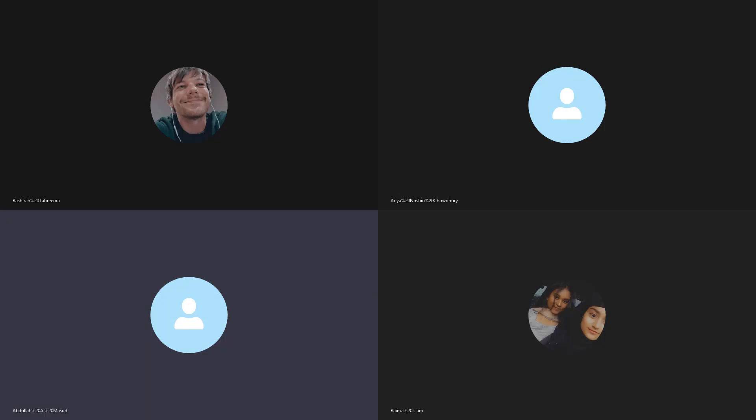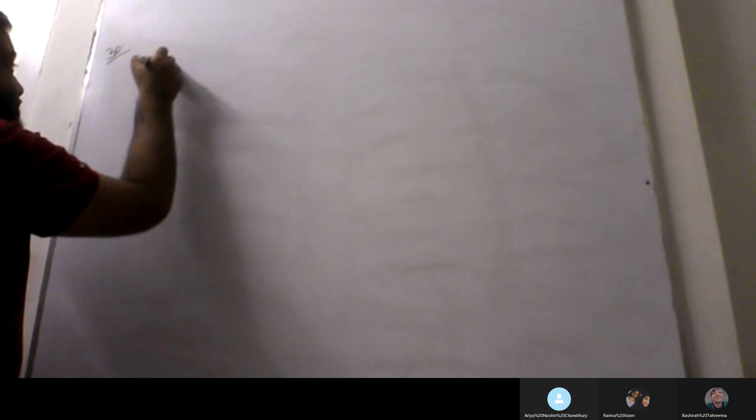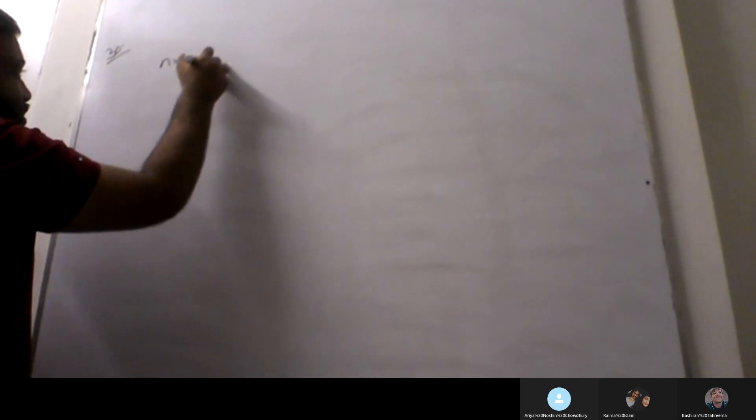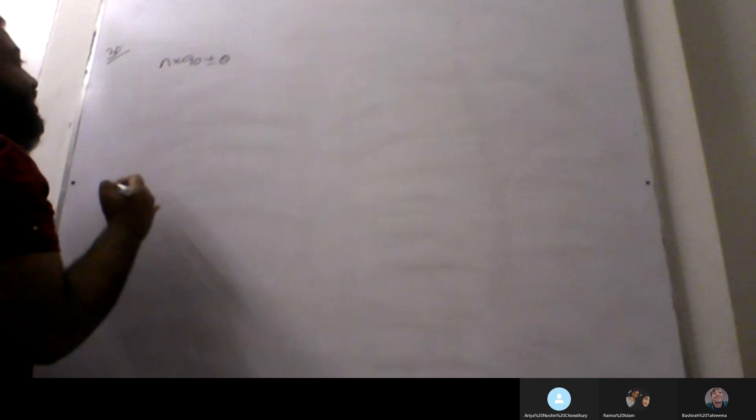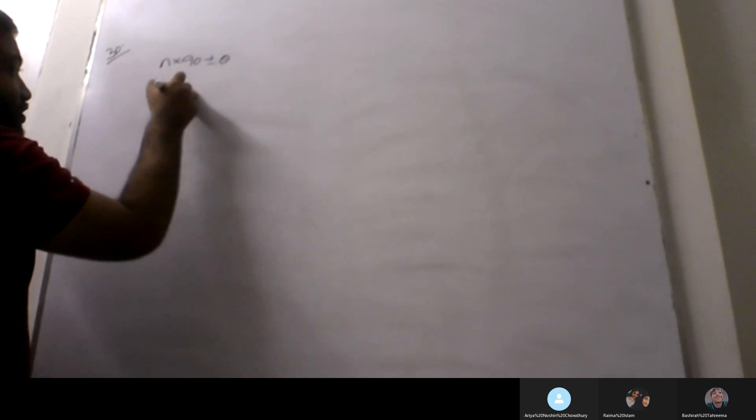Now, we have a particular explanation of the trigonometric 0 to 360. We have done the same explanation. The 0 to 360 is n into 90 plus minus theta. We have said that we have a relation to 90 degrees.